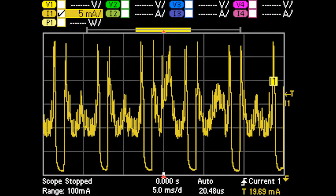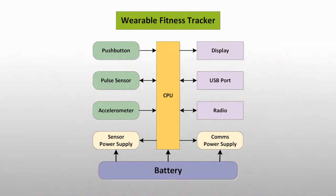These devices do have very small but highly variable battery drain — that's the challenge. We're looking at a concept diagram of a wearable fitness tracker, which in the center is controlled by a CPU, an embedded microprocessor. On the left, we have a series of inputs: